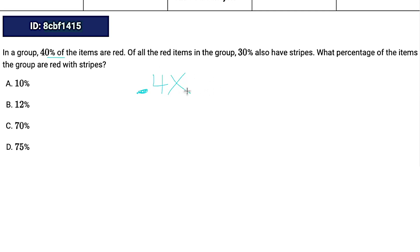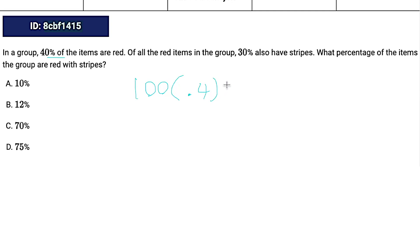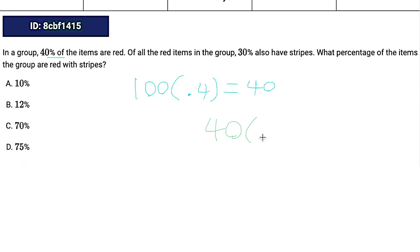And then of all the red items, 30% also have stripes. This is where things can get challenging. You want to take your original number and multiply by the number version of the percent. Since all the answers are in percent, we can make up a number for X. The easiest thing is to make our total 100 — that way it's out of 100%. So 100 times 0.4 gives us 40 red items. Now of the red items, 30% also have stripes — so it's not 30% of our 100, it's 30% of the red ones. We take 40 and multiply by 0.3. Plug that in, and we get 12 as our answer.